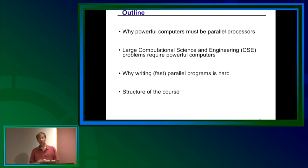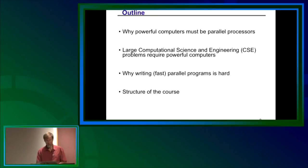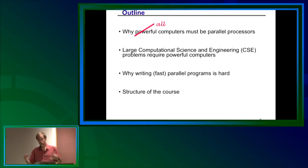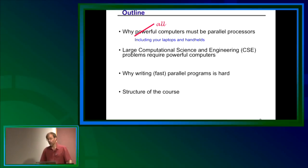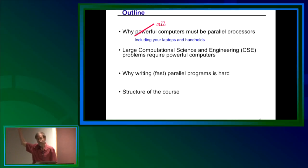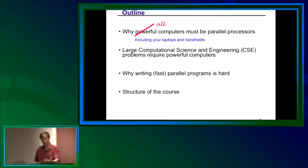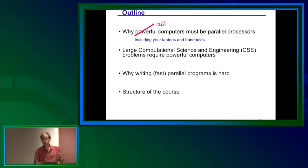Here's the outline of today's lecture. I want to start by telling you why powerful computers must all be parallel processors — in fact all computers have to be parallel. That includes not just big computers doing scientific and engineering computation, but your laptops and handhelds. Can you buy a sequential computer anymore? Basically all computers have become parallel and we have no choice but to deal with it. I'll give you some technological history about why that is.